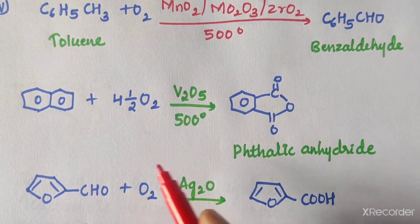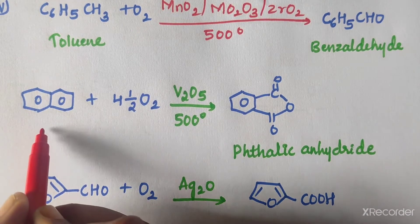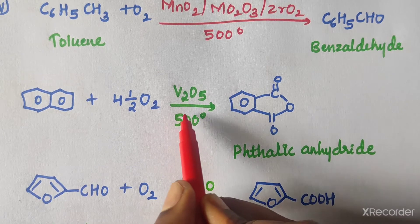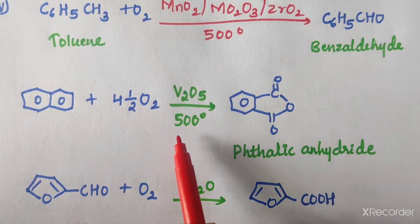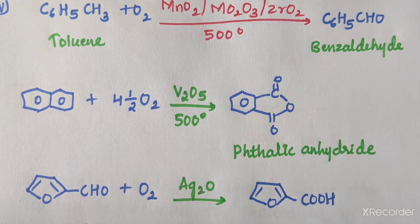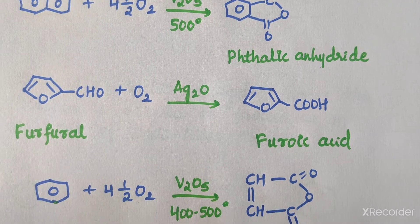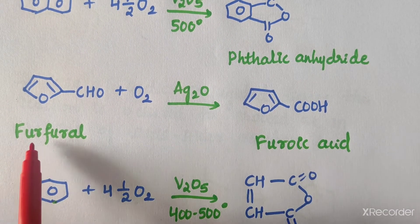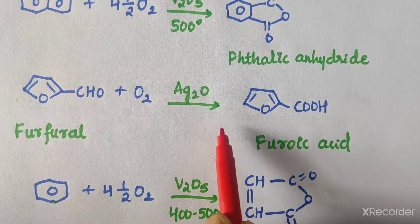Phthalic anhydride can be obtained from naphthalene on oxidation with oxygen in the presence of vanadium pentoxide (V₂O₅) at 500 degrees temperature, which gives phthalic anhydride. Furoic acid can be obtained from furfural with oxygen in the presence of Ag₂O.